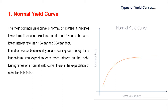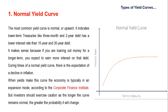The normal yield curve reflects higher interest rates for, say, thirty-year bonds as opposed to ten-year bonds. Intuitively, if you are lending your money for a longer period of time, you expect to earn higher compensation for that. When yields make the curve, the economy is typically in an expansion mode, according to the Corporate Finance Institute. However, investors should exercise caution, as the longer the curve remains normal, the greater the probability it will change.